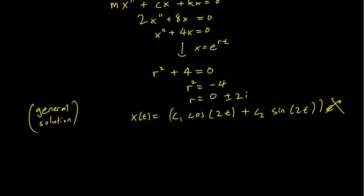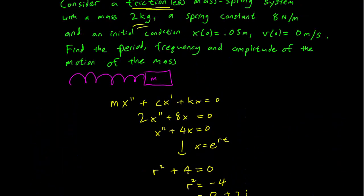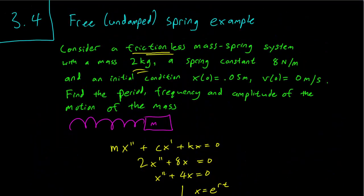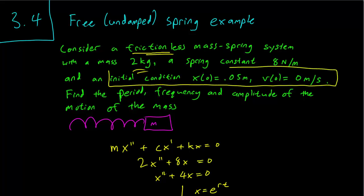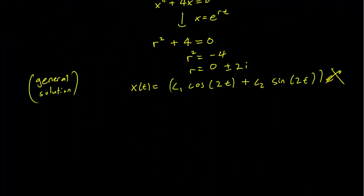The next step is to try to figure out what the c1 and c2 are going to be, and we have to use our initial conditions here. So x0 = 0.05 and v0 = 0. In other words, initial conditions are going to be t = 0, x = 0.05 and v = 0. And v is obviously going to be x'. So let's use the first initial condition first.